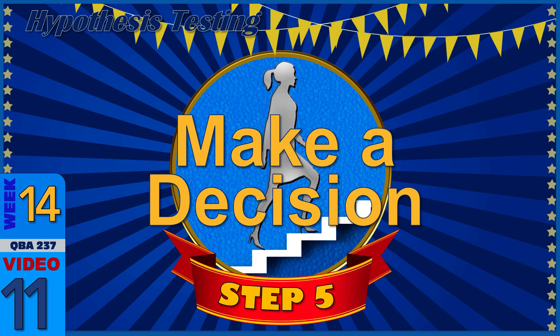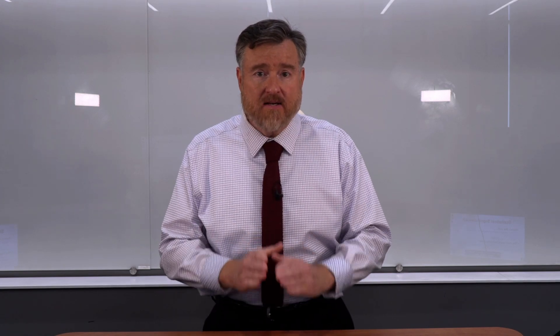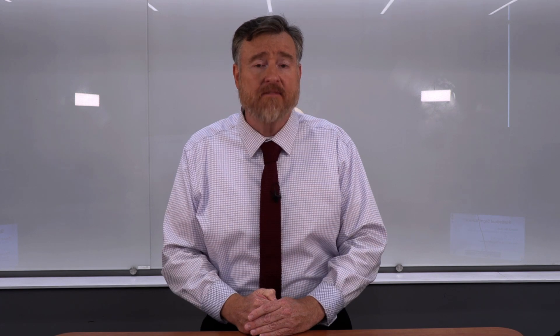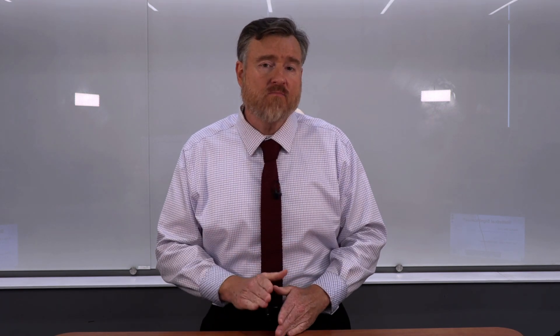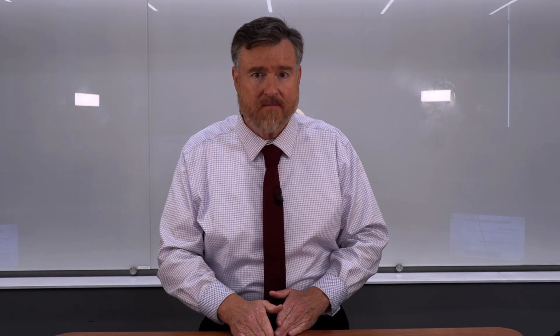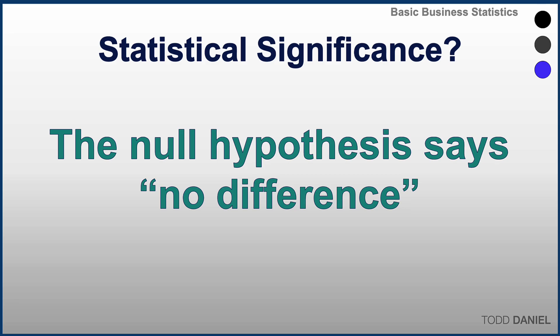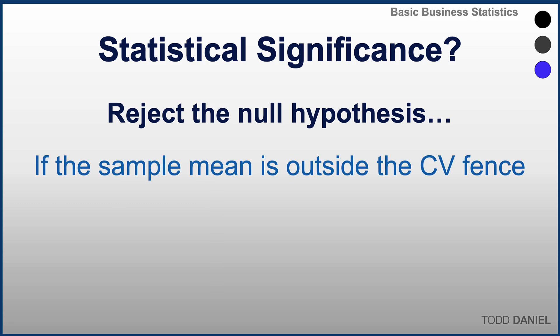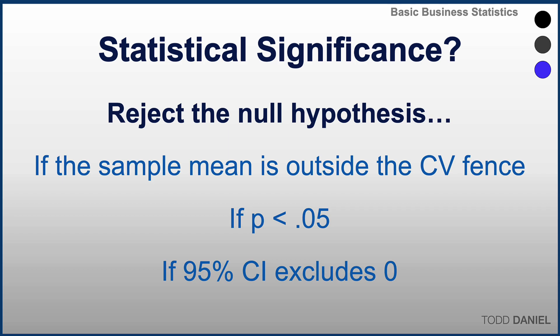Step five of our five steps of hypothesis testing is to make a decision about the significance of the results. We have been testing a null hypothesis to determine if there is a statistically significant difference between means. You reject a null hypothesis if the sample mean is outside of the critical value fence, if the probability value is less than 0.05, or if the 95% confidence interval around the mean difference excludes zero.